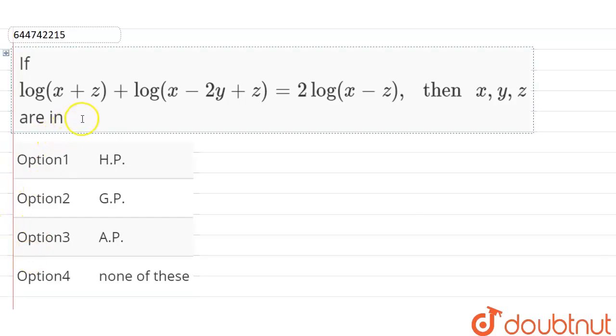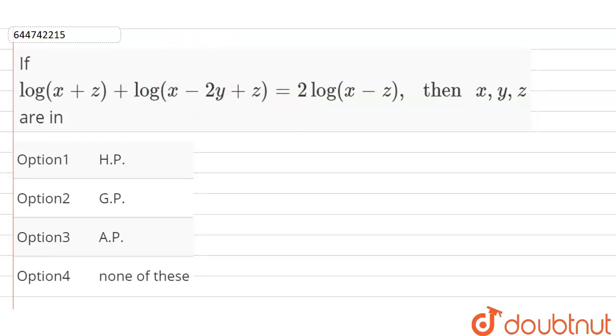If log of x plus z plus log of x minus 2y plus z is equal to 2 log of x minus z, then x, y, z are in. So this is the equation we have to find the relation between x, y and z.